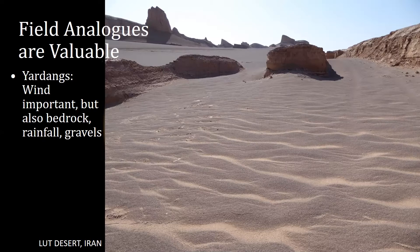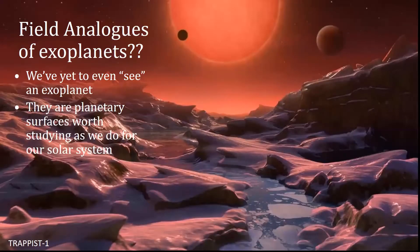We've also found that rainfall affects these in very different ways. We think there's rainfall on Titan even, and there wasn't in the past on Mars. These gravels are ubiquitous everywhere and are starting to play a very strong role in the story, and only because we go and stand there in the field for five days and try to understand them better. Field analogs are very important, but as we found out today, we've yet to even see a terrestrial exoplanet.